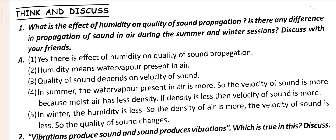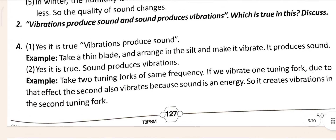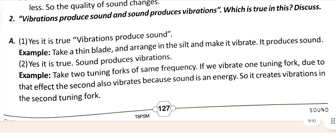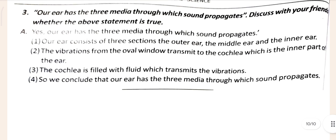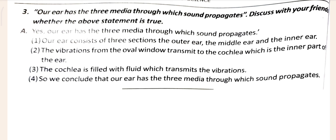Think and discuss is also given here. It's not very important, but lots of children write it, so if anyone wants to write it they can, otherwise just leave it. Whatever is in this chapter is totally completed — chapter number 5 is totally completed. We already covered keywords, question answers, project work, experiments, and think and discuss. If you have any doubts, match with your textbook. I hope this video is going to be helpful for you. We will meet in the next video. Jai Hind.